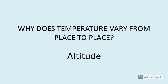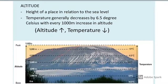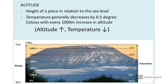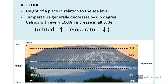During the last lesson we covered one of the core factors as to why temperature will vary from place to place — we covered altitude. The height of a place in relation to sea level will lead to a change in temperature. Generally, when you have an increase in altitude, meaning you go higher up, you will have a fall in temperature. This is important — please remember this relationship.